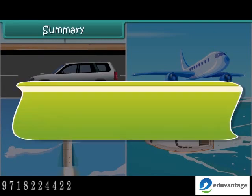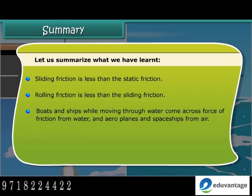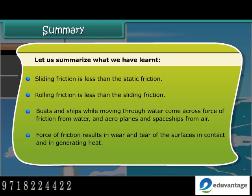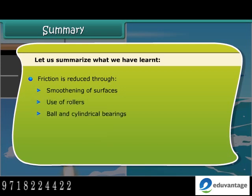In summary: sliding friction is less than static friction; rolling friction is less than sliding friction. Boats and ships moving through water encounter friction from water, and aeroplanes and spaceships encounter friction from air. Friction results in wear and tear of surfaces in contact and generates heat. Friction is reduced through smoothening of surfaces, use of rollers, ball and cylindrical bearings, lubrication of moving parts, and streamlined shape of vehicles.